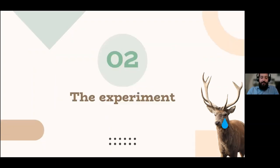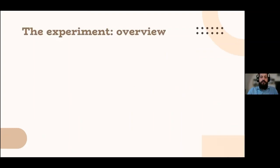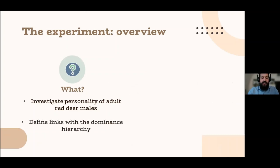So what did we do? We set an experiment, of course a methodology and an experiment, so that our deer will stop being sad and to start investigating, to give this small contribution to the investigation of the personality in red deer. To give you just a general overview on the experiment, what did we want to do? We wanted to investigate personality of adult red deer males and to define, if possible, some links with the dominance hierarchy.